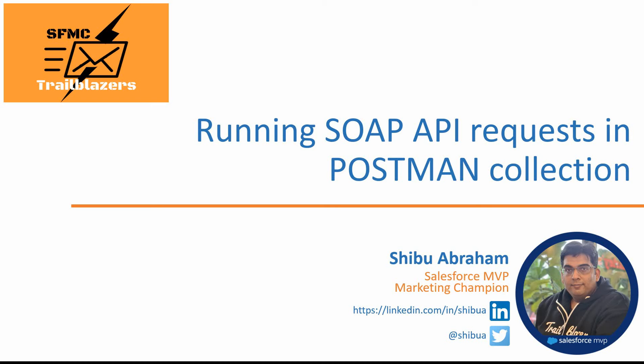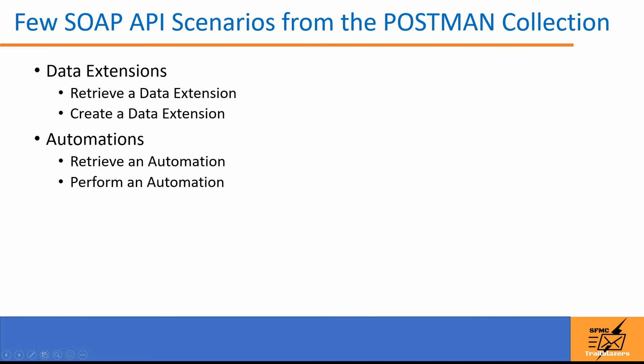Hello everyone, and welcome to the Marketing Cloud API series. In this video, we will look at running a few of the SOAP API requests in the Postman collection. We'll look at retrieving details about a data extension and creating one, and later we'll also see how to fetch details about an automation workflow in our org and then how to run it through the SOAP API request.